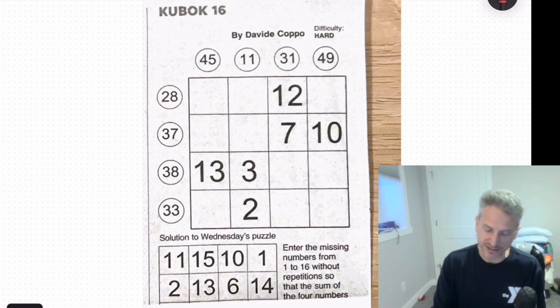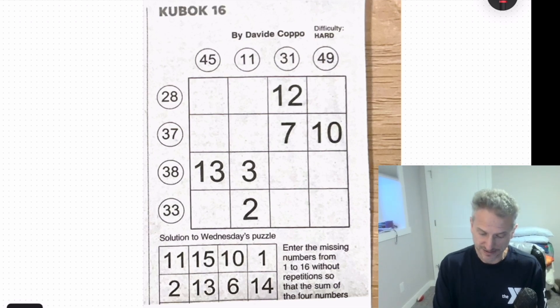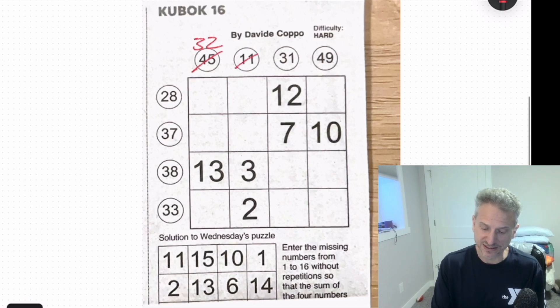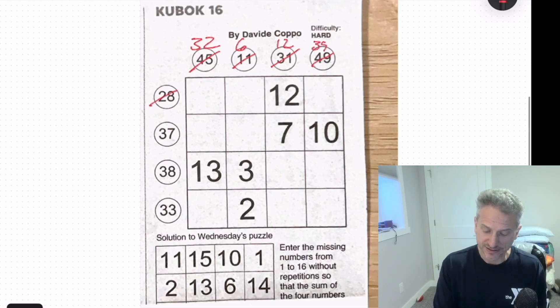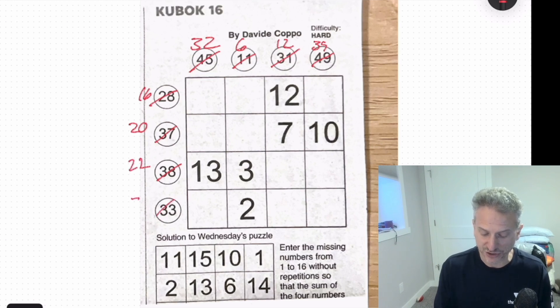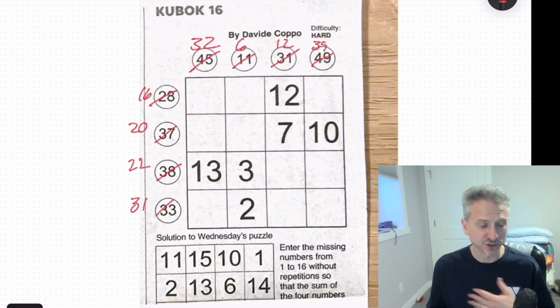What I like to do is I'd like to just start off with getting my new updated totals. So 45 minus 13 is 32. This would be 6. 19 from 31 is 12. And 10 from 49 is 39. This would be 16. 17 from 37 is 20. And 16 from 38 is 22. And 33 minus 2 is 31. So we have our new totals here.